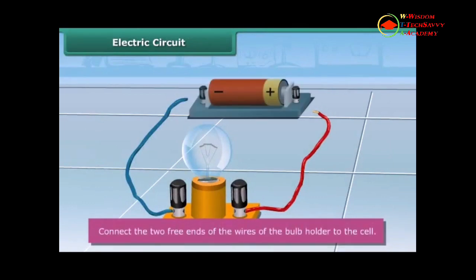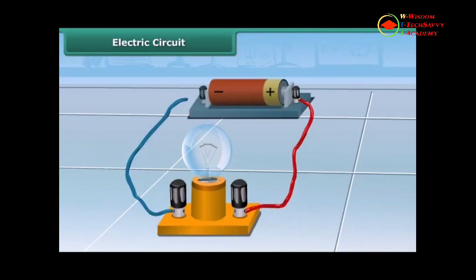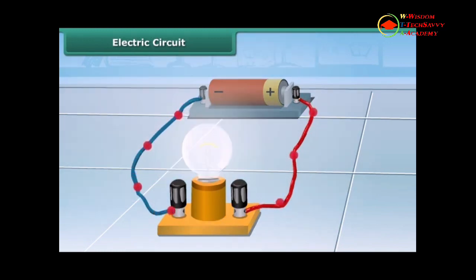Finally, connect free end of one wire to the positive terminal of the cell and free end of the other wire to the negative terminal of the cell. This may be done with the help of a rubber band or an adhesive tape. After the connection, you can see that the bulb lights up.